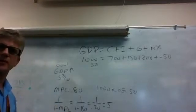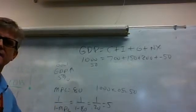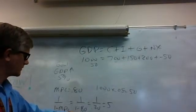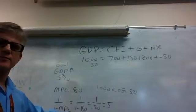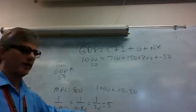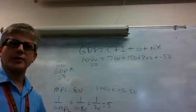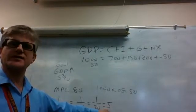The government spending multiplier is 1 over 1 minus MPC, so it equals 1 over 1 minus 0.80. Then we have 1 over 0.20. So if you take the 1 divided by 0.20, you're going to get 5. That is the spending multiplier.